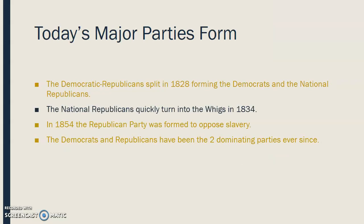The Democratic Republicans split in 1828, which formed the Democrats and the National Republicans. The National Republicans quickly turned into the Whigs in 1834. And then 20 years later they formed the Republican Party, which was basically formed to oppose slavery. The Democrats and Republicans have been the two dominating parties ever since then, and that's why they are the ones we only talk about today.